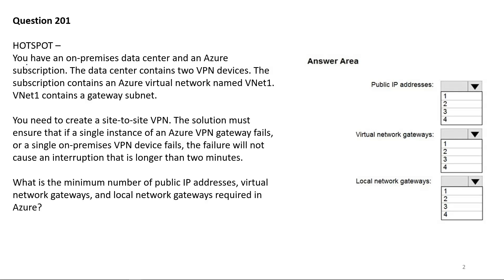Question 201. You have an on-premise data center and an Azure subscription. The data center contains two VPN devices. The subscription contains an Azure virtual network named vNet1. vNet1 contains a gateway subnet. You need to create a site-to-site VPN. The solution must ensure that if a single instance of Azure VPN gateway fails, or a single on-premise VPN device fails, the failure will not cause an interruption that is longer than 2 minutes.